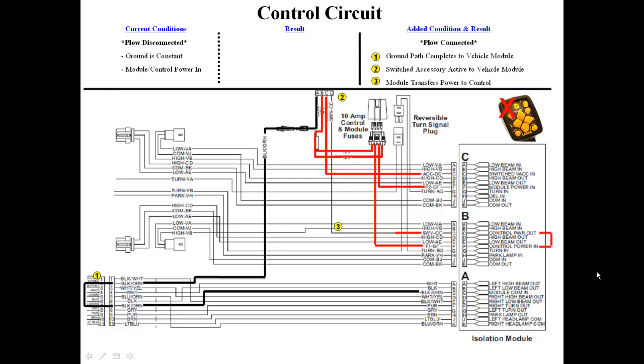The isolation module transfers 12 volts from the F1 fuse to the cab control, illuminating the backlight, and the control is now ready to operate.